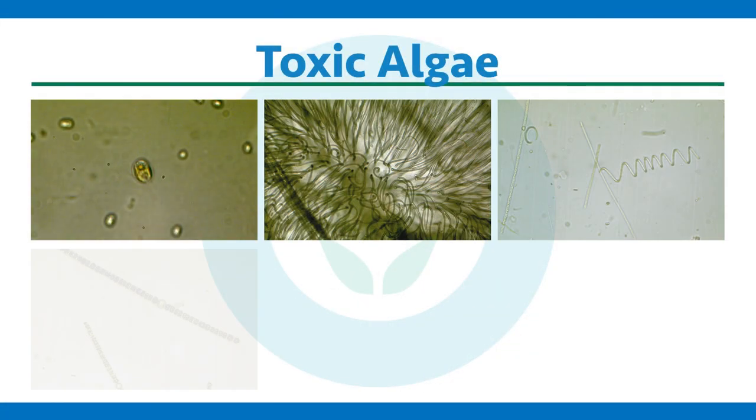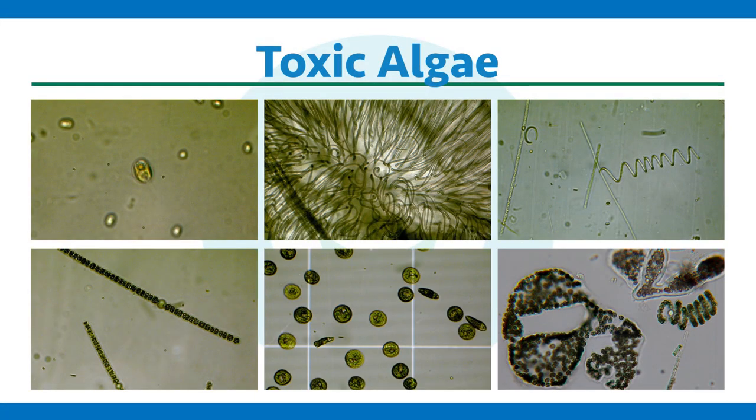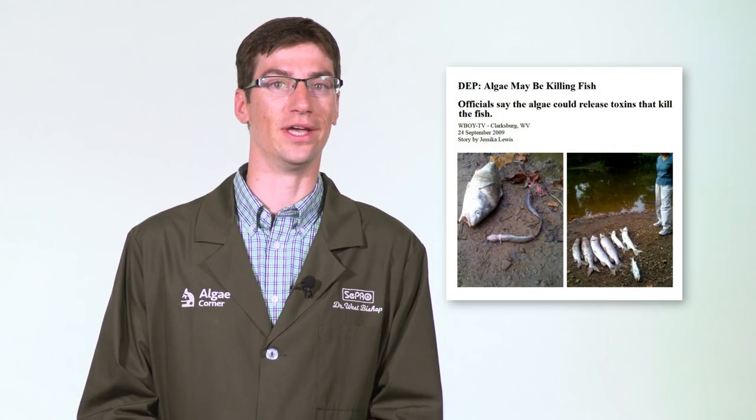Another thing to keep an eye out for is toxic algae. This is on the rise, and there are many different algae that can directly produce toxins that negatively impact fish. The golden algae — the haptophytes — can produce a number of toxins that impact the gills. Some cyanobacteria can have acute toxicity from the toxins they produce, and indeed some euglenophytes, or euglena, can produce these fish-killing toxins. So keep an eye out for toxic algae as a culprit of potential fish kills.